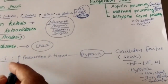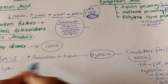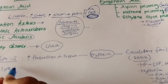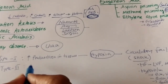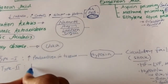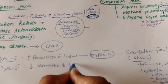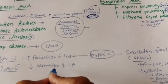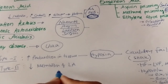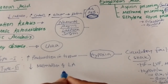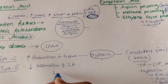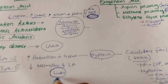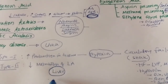Type 2 lactic acidosis: the problem in type 2 is decreased metabolism of lactic acid. Lactic acid is produced in hypoxic tissues but is metabolized in the liver. If the patient has underlying liver disease — whether acute or chronic — this impairs hepatic metabolism of lactic acid.